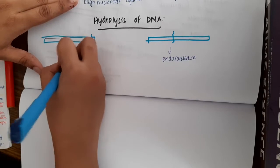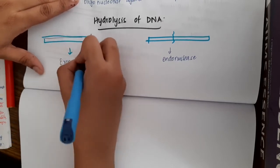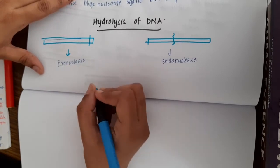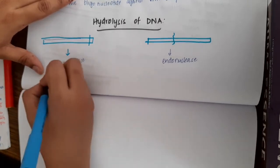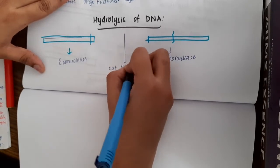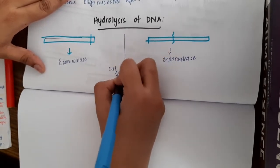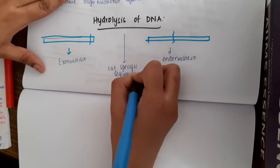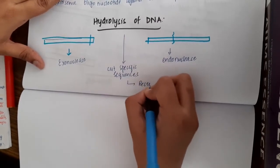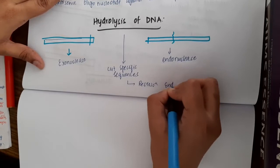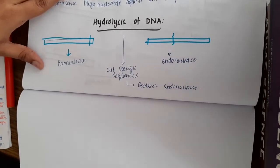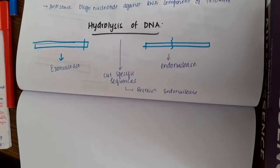Exonuclease acts at the ends. There are certain specific sequences in DNA where cuts occur, and these specific sequences in DNA are cut with the help of restriction endonuclease, also called as molecular scissors. So this is about hydrolysis of DNA.